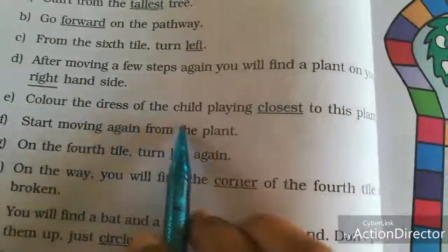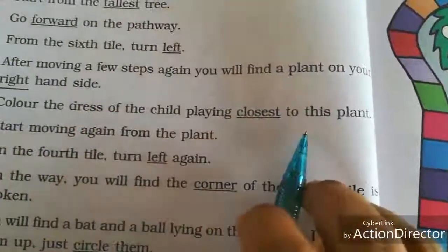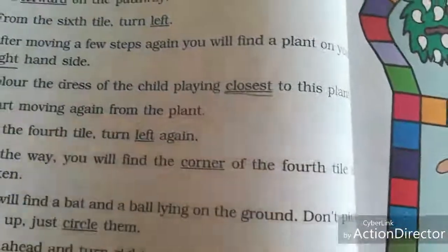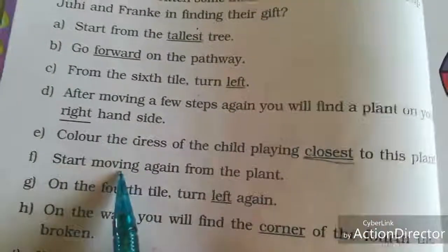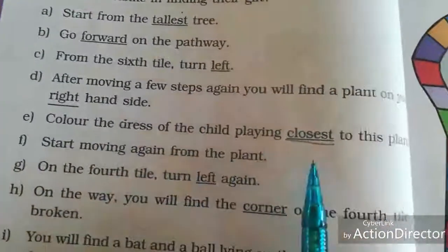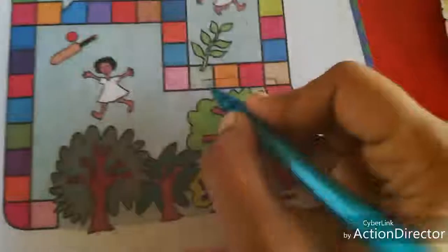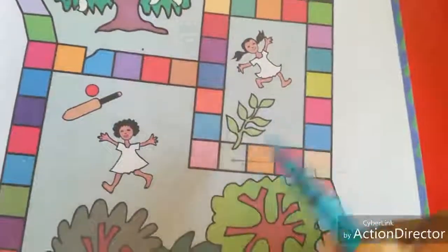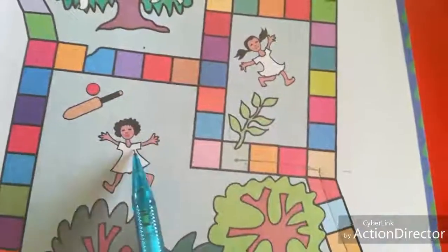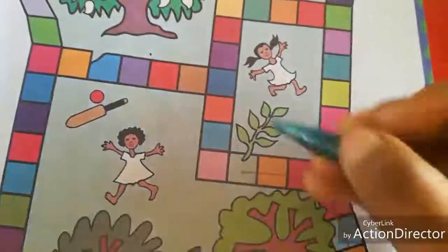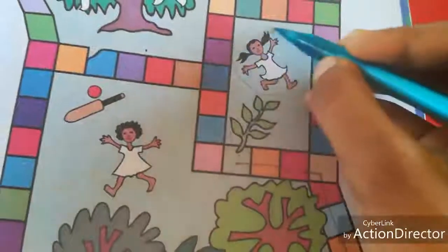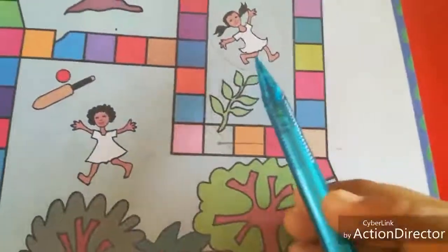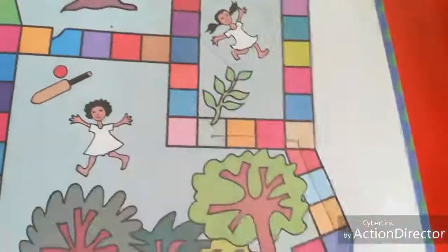Next, color the dress of the child playing closer to this plant. Closer means which child is very close to the plant. Which child is playing closer to the plant — Juhi or Frankie? This child is very close to the plant, so we want to color the dress of that child.